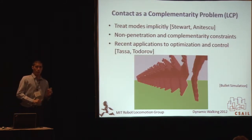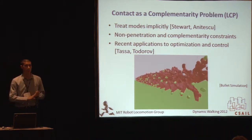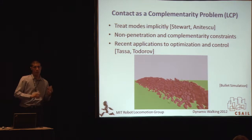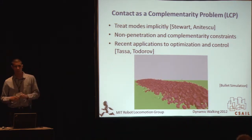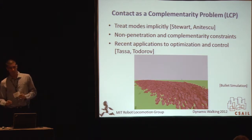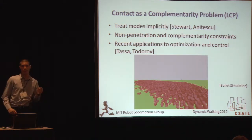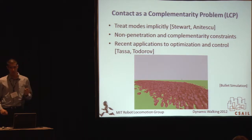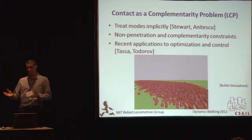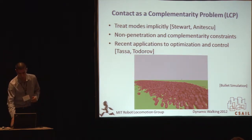There are a lot of communities out there — graphics, simulation, grasping — who have thought a lot about the contact problem. No one is really looking at this using a hybrid schedule or springs. The idea is to treat these modes implicitly: specify a set of constraints including strict non-penetration as well as a complementarity constraint. There have certainly been recent applications using this sort of approach towards optimization and control.